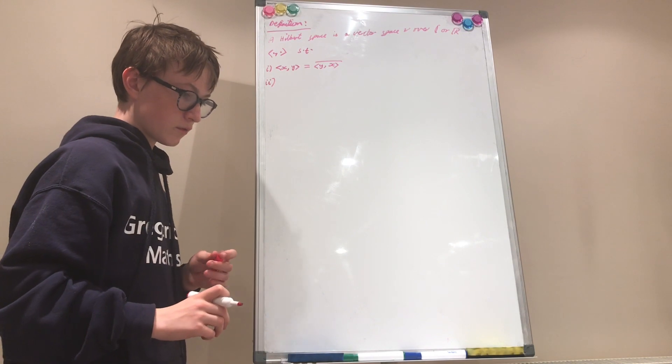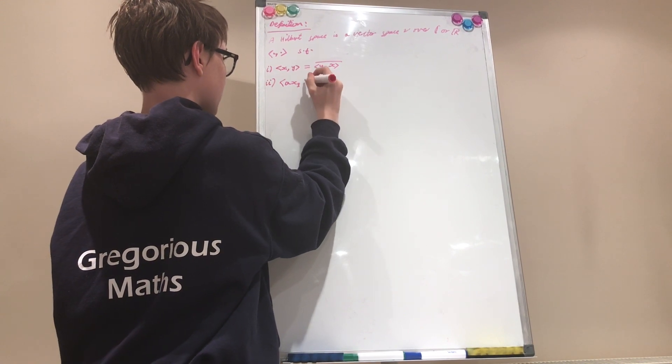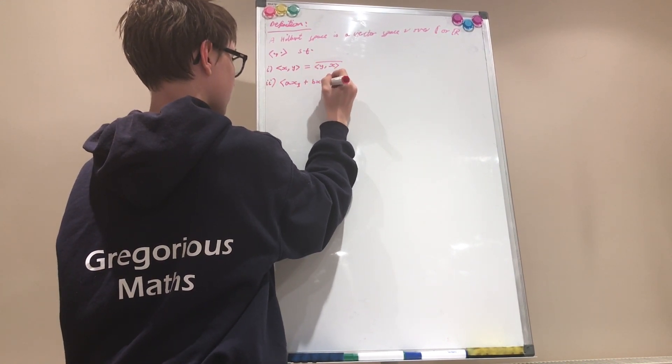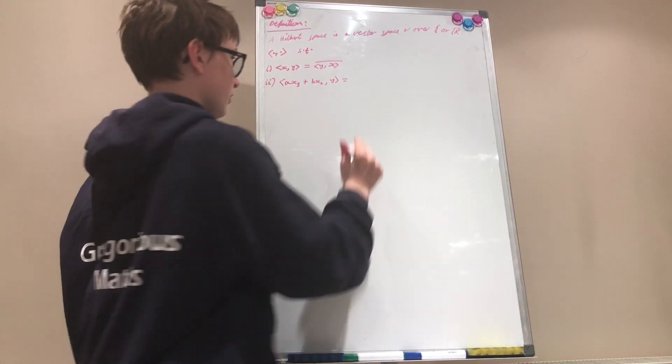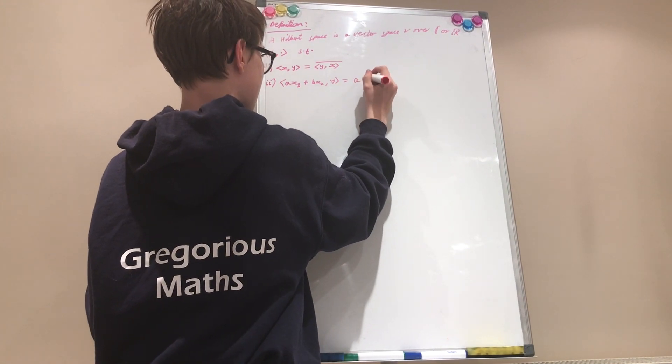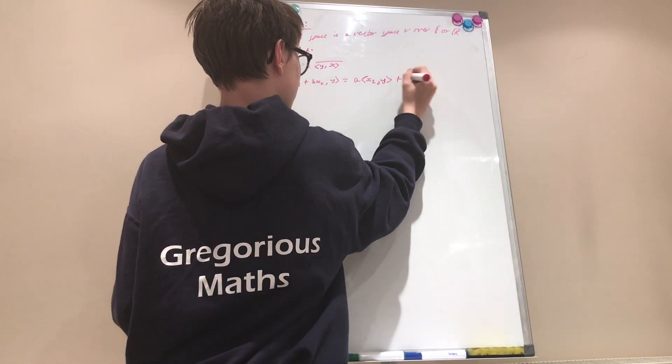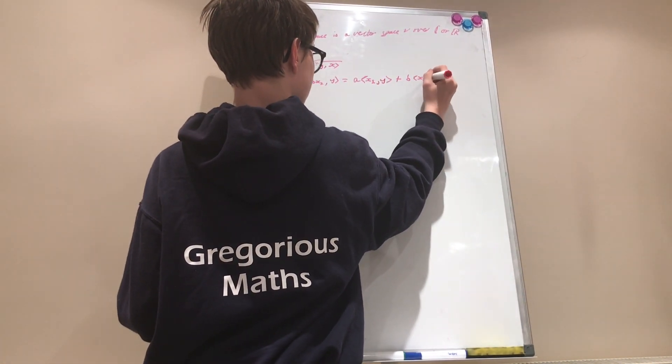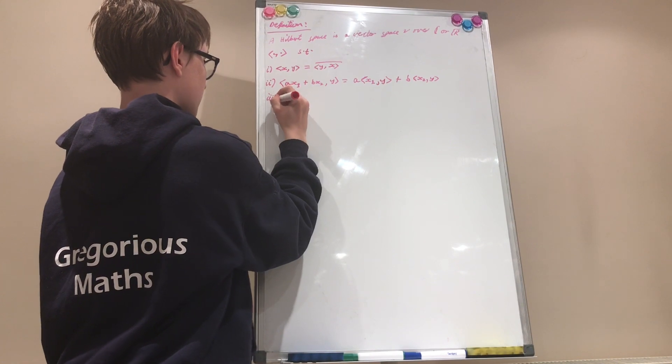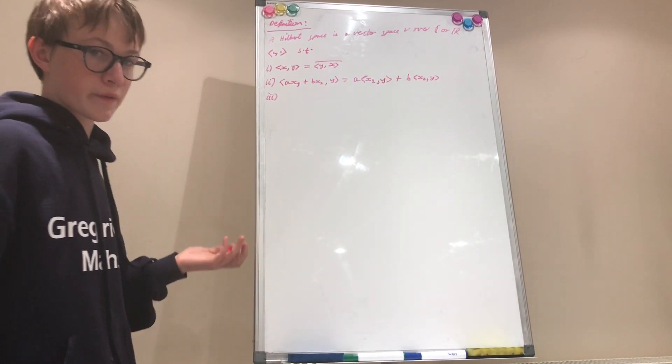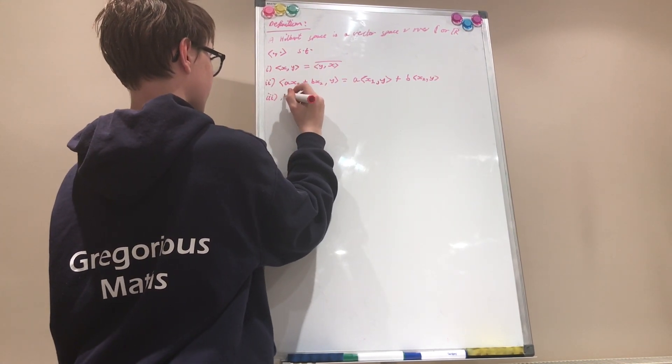Now number two is that ax1 plus bx2 inner product y equals ax1 inner product y plus bx2 inner product y.